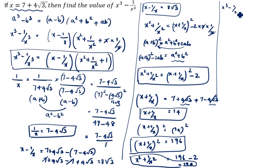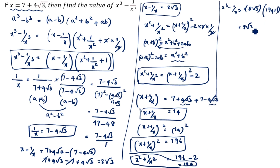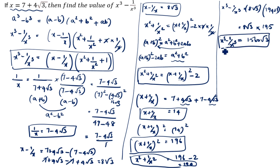Now we substitute into the formula. x cube minus 1 by x cube equals (x minus 1 by x) into (x square plus 1 by x square plus 1). The value of x minus 1 by x is 8 root 3, and x square plus 1 by x square plus 1 is 194 plus 1 equals 195. So 8 root 3 into 195 equals 1560 root 3. Therefore x cube minus 1 by x cube is equal to 1560 root 3. This is the first method.